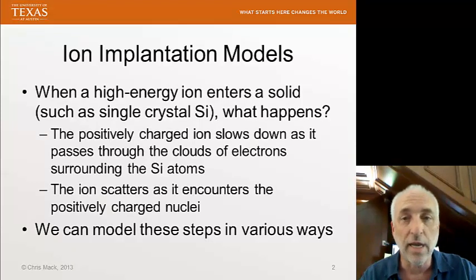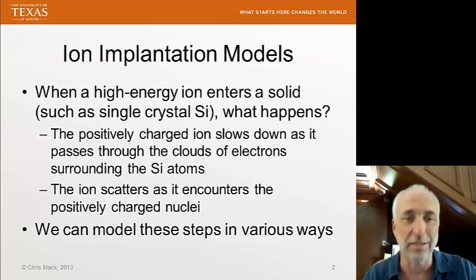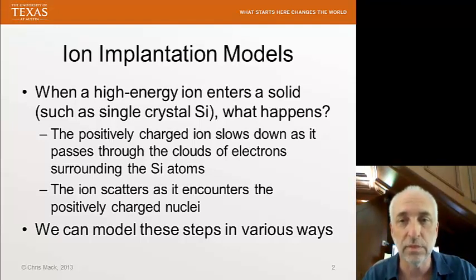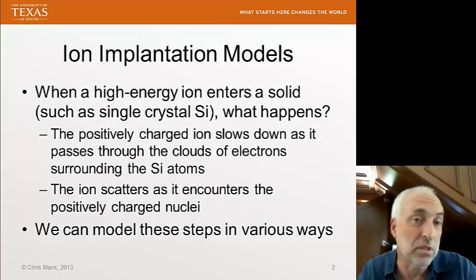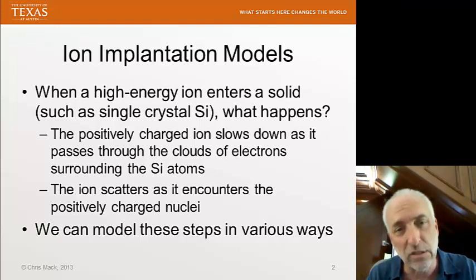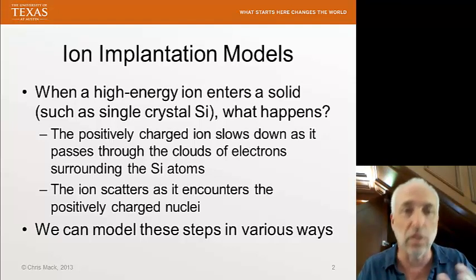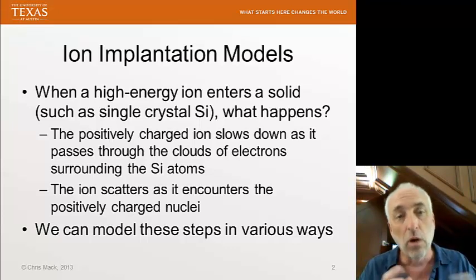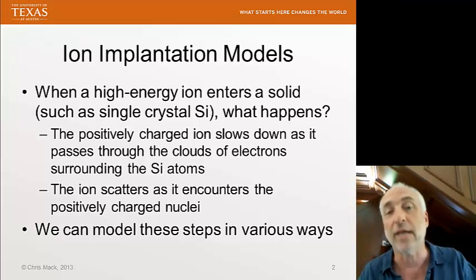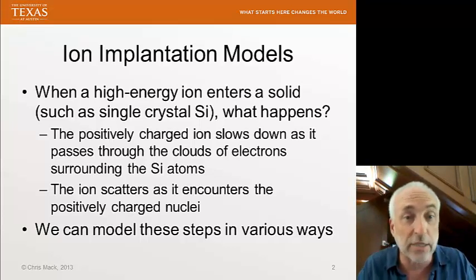When a high-energy ion bombards a solid — like a bullet slamming into it — what happens to this ion when it enters the solid? There are two basic things. The ion can interact with the electron cloud that surrounds the nucleus of a silicon atom, or that ion can interact with the nucleus of the silicon atom. The interactions will be very different for those two cases.